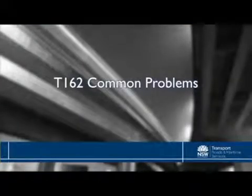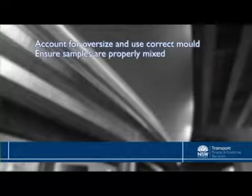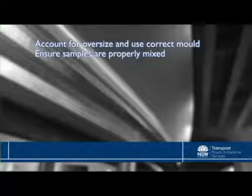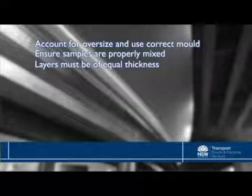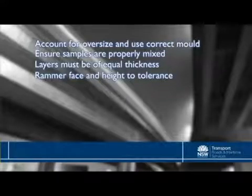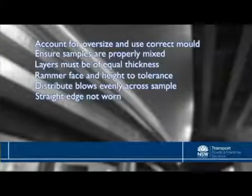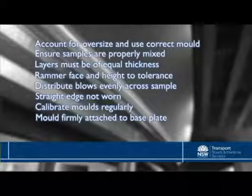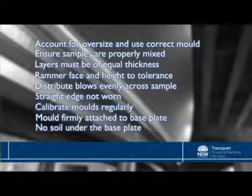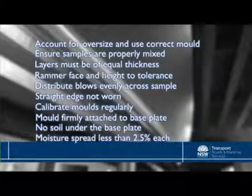What do we have to be on the lookout for in regard to our compaction test T162? Oversize — the plus 37.5mm must be accounted for by being weighed in air and water. The mould size needs to be selected correctly. All material needs to be properly mixed for the three or so moisture increments. The layers need to be of equal thickness within tolerances. Rammer face and drop height must be within tolerance and not worn. The blows need to be evenly distributed across the sample. The straight edge, if worn, can produce a biased result. Moulds need to be calibrated regularly and firmly attached to the base plate. We need to ensure there is no soil under the base plate, as this insulates the compactive effort. Lastly, the spread between moisture increments needs to be less than 2.5%.